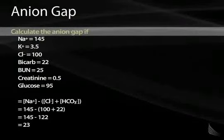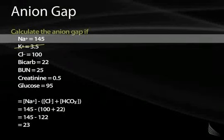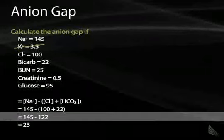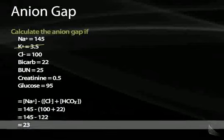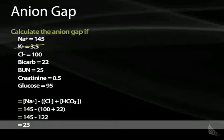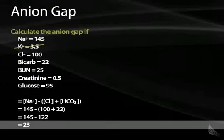It's important to remember how to calculate an anion gap. From a chem panel, ignore potassium. Take sodium (145), subtract the sum of chloride (100) plus bicarbonate, giving an anion gap of 23. A normal anion gap is between 8 and 12, so this patient has an anion gap. An anion gap means there is something creating a gap between negative and positive charges — usually some type of drug or anion the body is producing that it cannot get rid of properly.